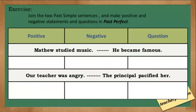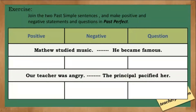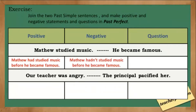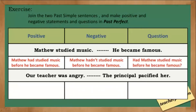Join the two past simple sentences and make positive and negative statements and questions in past perfect. Number one: Matthew studied music and he became famous. The correct positive statement should be: Matthew had studied music before he became famous. Negative: Matthew hadn't studied music before he became famous. And the question: Had Matthew studied music before he became famous?